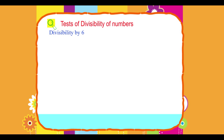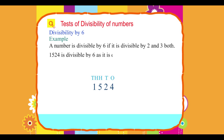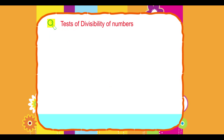Divisibility by 6: A number is divisible by 6 if it is divisible by both 2 and 3. Example: 1524 is divisible by 6 as it is divisible by both 2 and 3.